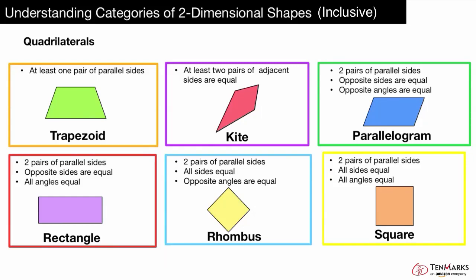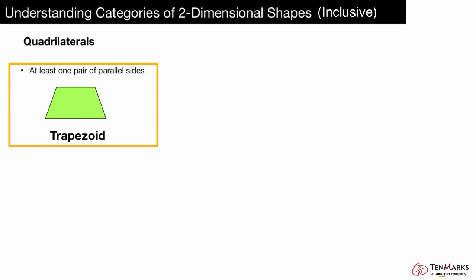Sometimes shapes are special types or subcategories of other shapes. In this lesson, you'll learn how to categorize two-dimensional shapes. Let's look at a trapezoid as an example. This is the image many people think of when they think of a trapezoid. It has one pair of parallel sides, at least. But remember, the definition of a trapezoid is a quadrilateral with at least one pair of parallel sides. So can you think of some other shapes that you've seen with at least one pair of parallel sides?